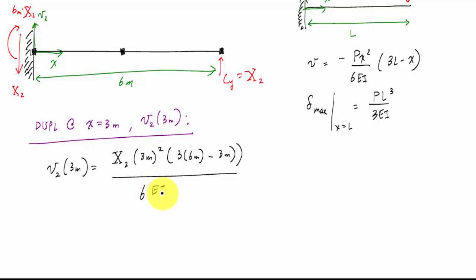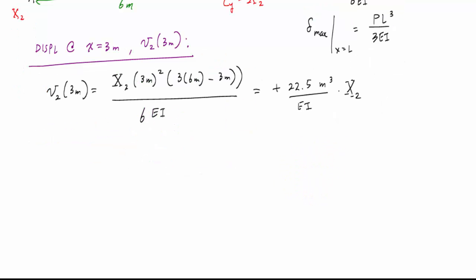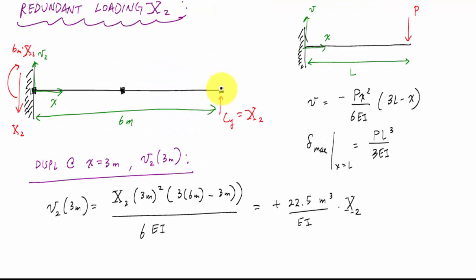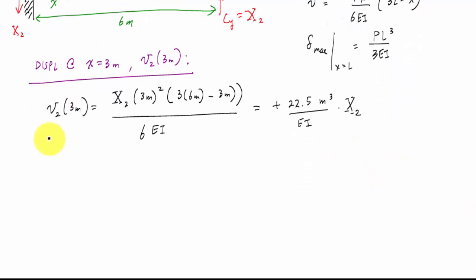Divided by 6EI and when I substitute and solve I will get a positive 22.5 meters cubed over EI. Then for the last point at the tip of the cantilever, I know it's my max location. I could use the same equation plug in x equals 6 or I could just use this relationship here. This will tell me that my displacement at the tip of the cantilever at 6 meters is x2 times 6 meters cubed over 3EI which is 72 meters cubed over EI times x2.